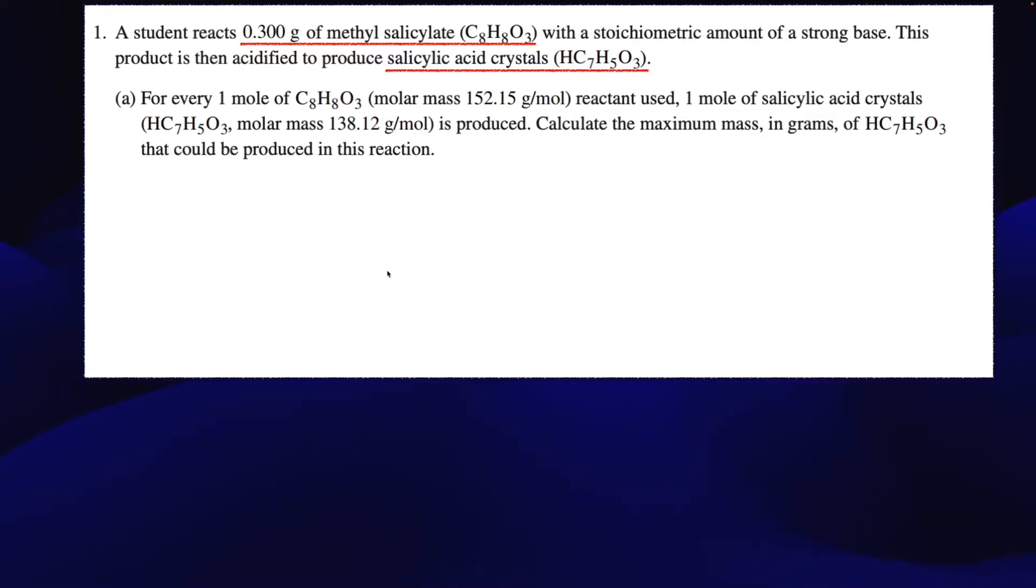So letter A, for every one mole of C8H8O3, and notice they give us a molar mass which is kind of nice, that's reactant used. One mole of salicylic acid crystals, and again it gives us the molar mass, is produced. Calculate the maximum mass in grams of HC7H5O3 that could be produced in this reaction.